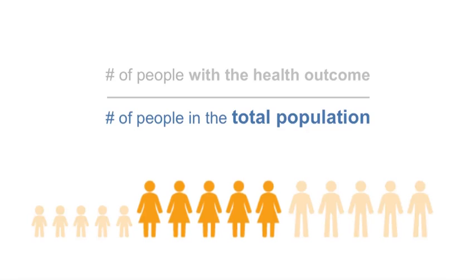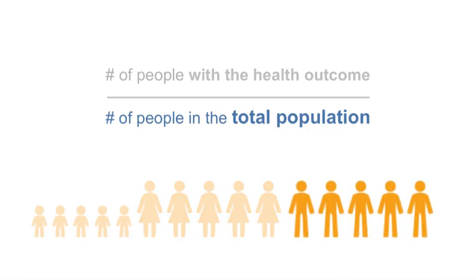Think about who would be in the denominator when calculating the prevalence of pregnancy among women in North Carolina. The denominator would be women of reproductive age in North Carolina who are able to become pregnant. Now, think about who would be in the denominator when calculating the prevalence of prostate cancer in the United States — this would be men susceptible to prostate cancer in the United States.